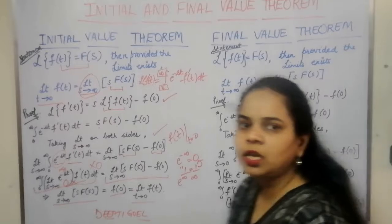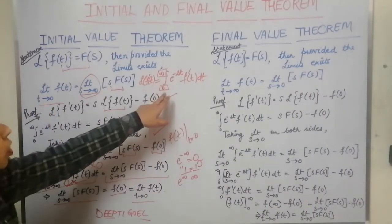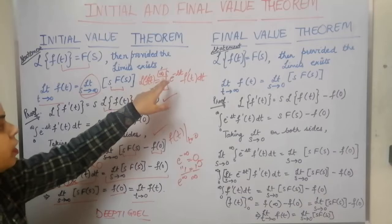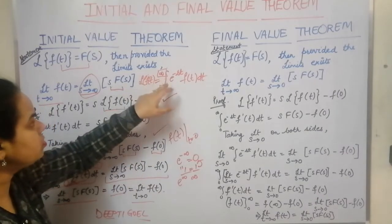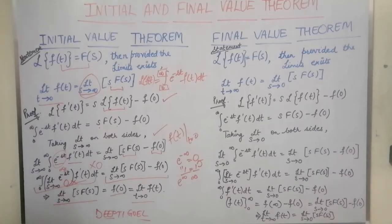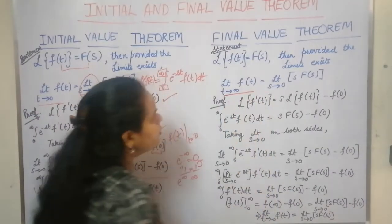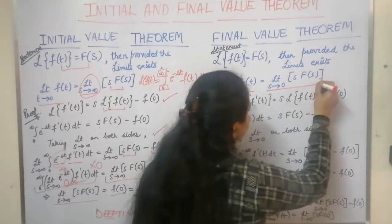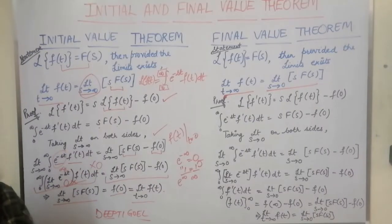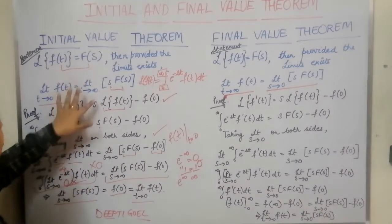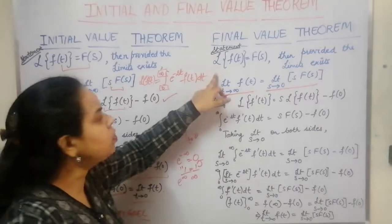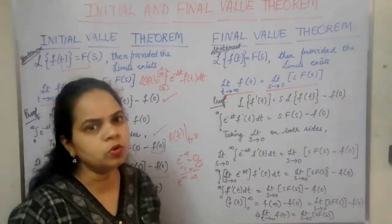Now let us come to the final value theorem. As already mentioned, the Laplace transform is defined by the integral from 0 to infinity of e^(−st)·f(t) dt, where the upper limit is infinity for t. So the final value theorem states: limit t→∞ of f(t) = limit s→0 of s·F(s). The basic difference between the initial and final value theorems is that when t→0 in the initial value theorem, s→∞; but in the final value theorem, t→∞ and s→0.